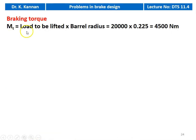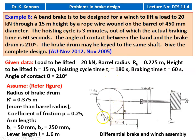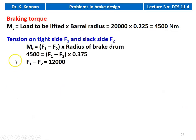Braking torque M_T equals load to be lifted into barrel radius: 20,000 into 0.225 equals 4,500 Newton meter. Tension on the tight side is F1 and the slack side is F2. The design torque equals F1 minus F2 into radius of the brake drum. So 4,500 equals F1 minus F2 into 0.375, giving F1 minus F2 equal to 12,000. This is equation one.